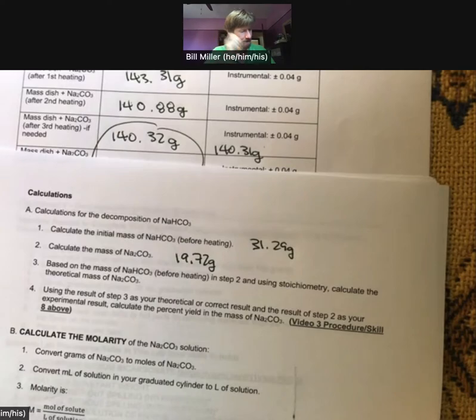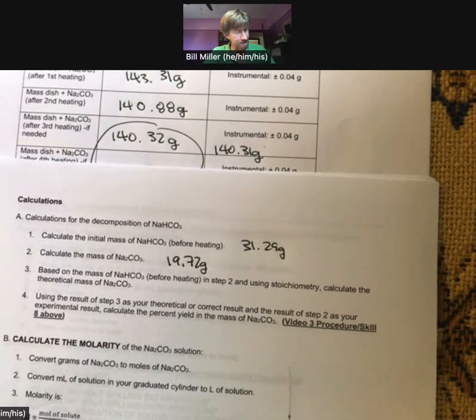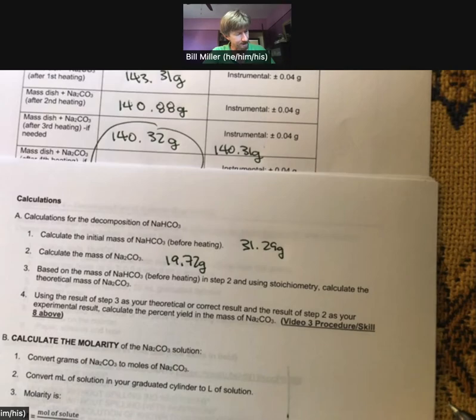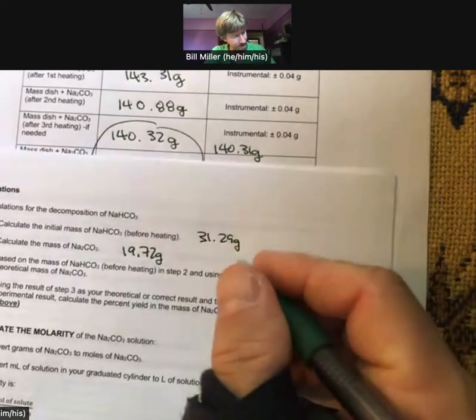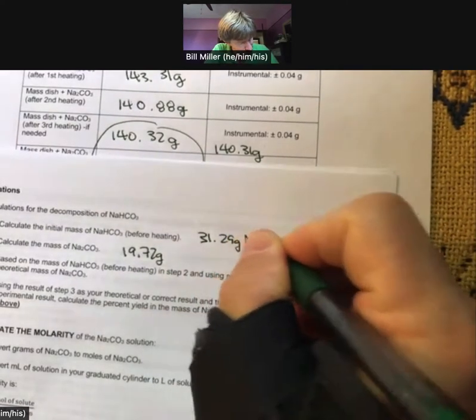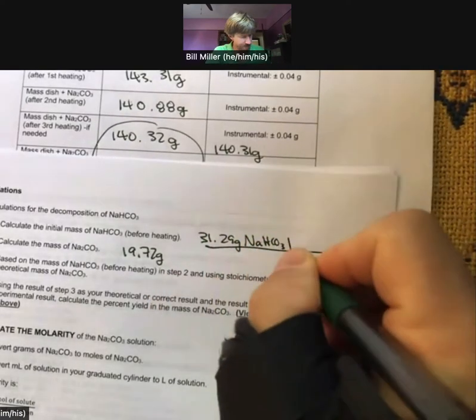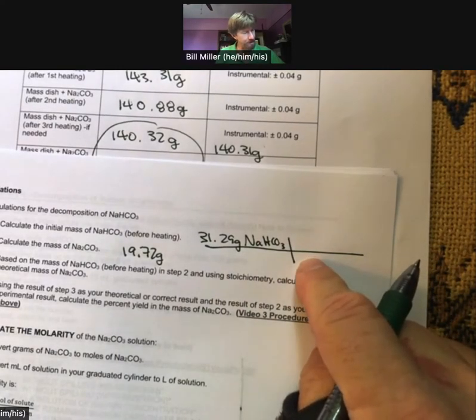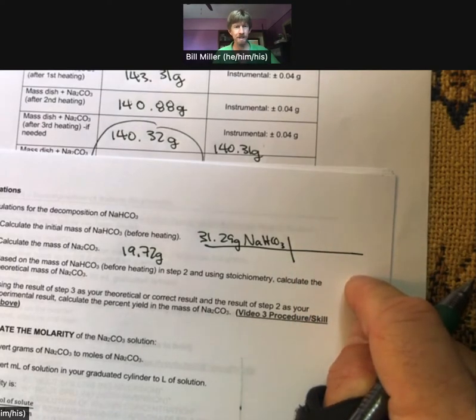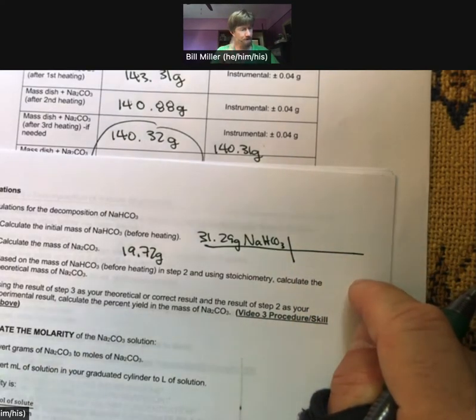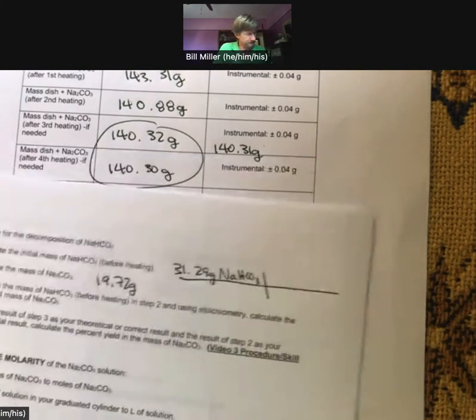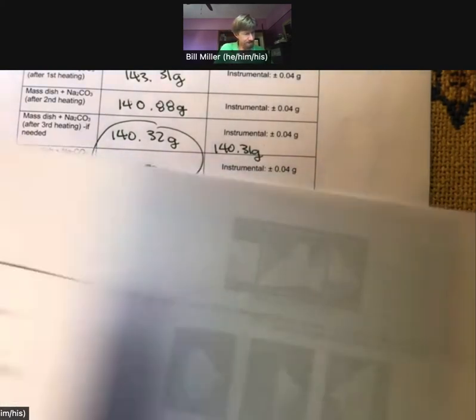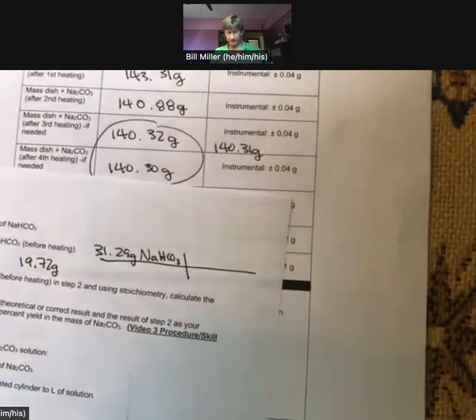Based on the mass of sodium bicarbonate before heating in step two and using stoichiometry, calculate the theoretical mass of sodium carbonate. I know I have 31.29 grams of sodium bicarbonate and I can turn the grams into moles. Then I have a two to one mole ratio, two moles of sodium bicarbonate for every one mole of carbonate. The molar mass is given to you somewhere in here.